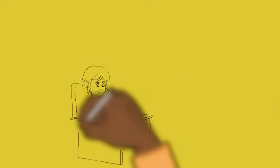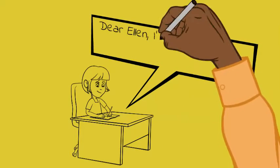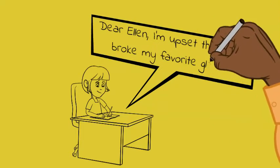Anne acts out her best choice. She decides to write about how she feels. She writes, 'Dear Ellen, I'm upset that you broke my favorite glass.'